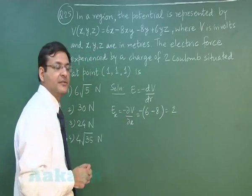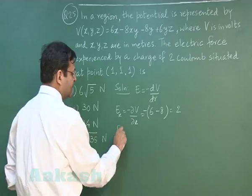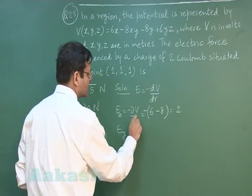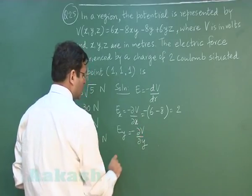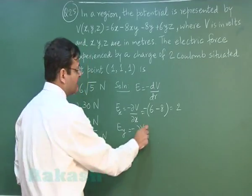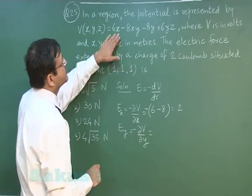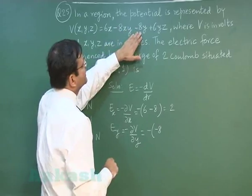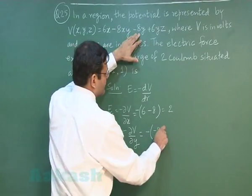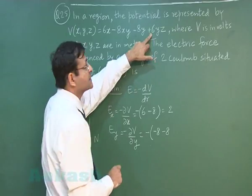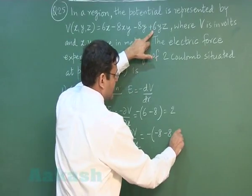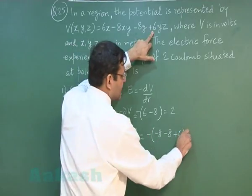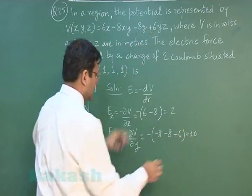This is the value of electric field. On similar lines you can calculate the value of Ey by differentiating with respect to y, -∂V/∂y. Then you can calculate Ez. If you calculate here this will be 0, this will be -8x that is -8, and this is again -8, and here it will be plus 6. So this makes it -10, and again the minus sign, so that makes it 10. This is the other electric field.